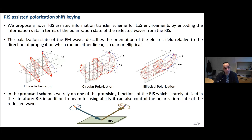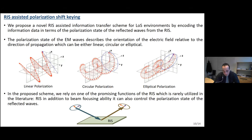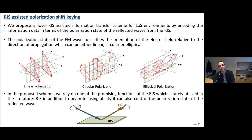We propose a novel RIS-assisted information transfer scheme, especially for line-of-sight environments, by encoding information data in terms of the polarization state of the reflected wave from the RIS. The polarization state of an electromagnetic wave simply describes the orientation of the electric field relative to the direction of propagation. There are three main polarization states: linear polarization, circular polarization, and elliptical polarization. In the proposed scheme, we rely on a rarely utilized function of RIS — that in addition to offering beamforming gain, it can also control the polarization state of the reflected wave.